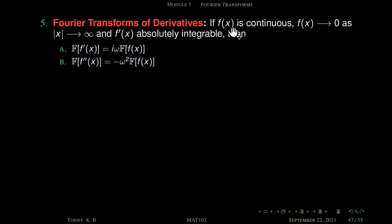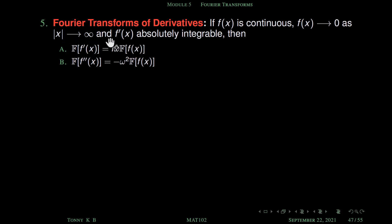This is our statement: if f(x) is continuous and we assume that f(x) tends to 0 as |x| tends to infinity — meaning either x tends to infinity or x tends to minus infinity, f(x) always tends to 0. That is a very important assumption. The other assumption is that f'(x) is absolutely integrable.